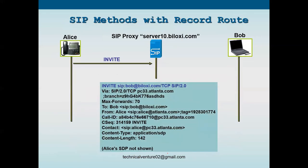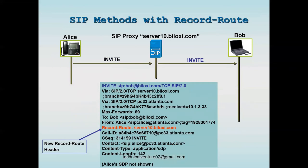Let me show the SIP methods with Record-Route. The first INVITE from Alice to the SIP proxy is a normal message with Via header and all fields. In the next INVITE from the SIP proxy server to Bob, you can see a Record-Route header added: record-route: server10.byloxy.com. This is optional but can be added.